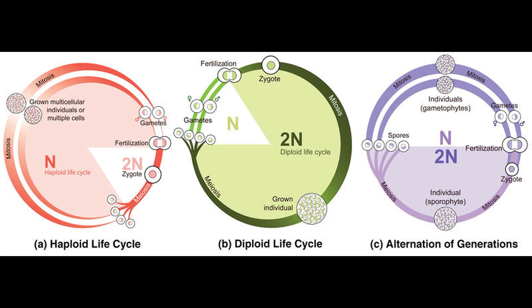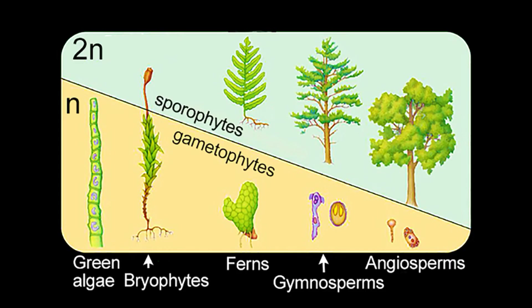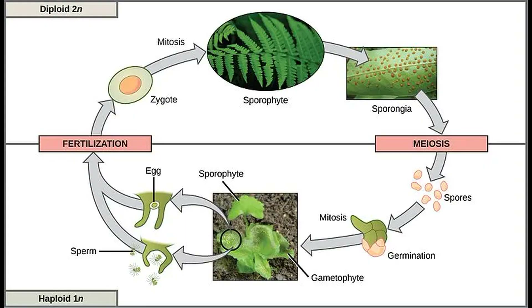Their cycle is an alternation of generations, which also consists of haploid and diploid stages, but each stage is multicellular. The haploid stage is called the gametophyte, since it produces the gametes. These gametes fuse into a zygote, which in turn develops into the diploid stage called the sporophyte, that produces the spores. It should be noted that the sporophyte and gametophyte stages often don't look the same in terms of size and morphology. In vascular plants, the diploid sporophyte is the predominant stage, while the haploid gametophyte is very small.